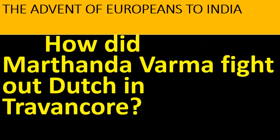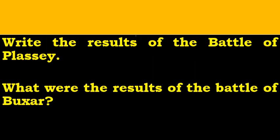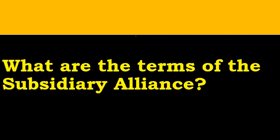The first question is: How did Martanda Verma fight out the Dutch in Ravencourt? You will also have to learn the results of the Battle of Klasi and the results of the Battle of Baksa. What are the terms of the subsidiary alliance?